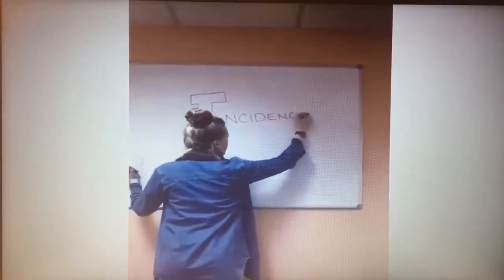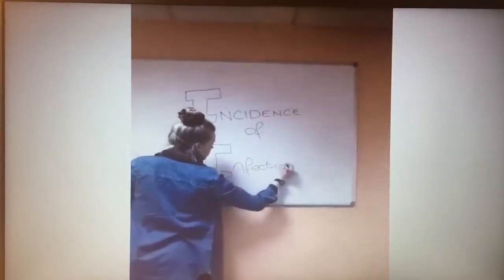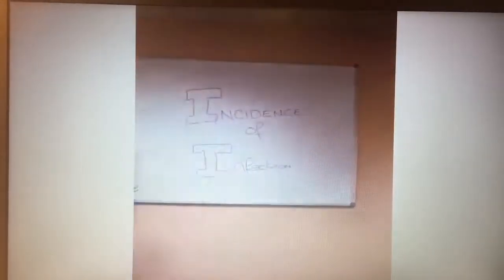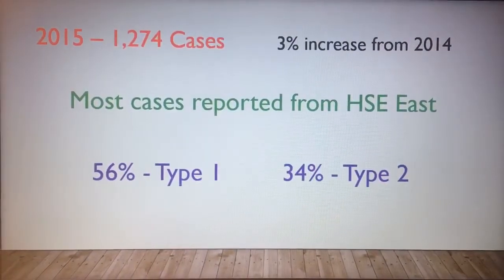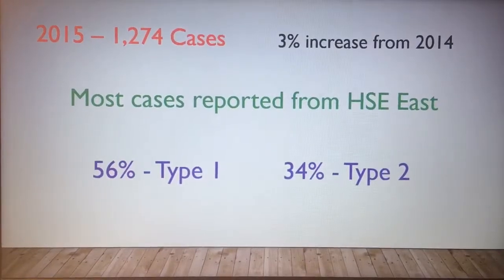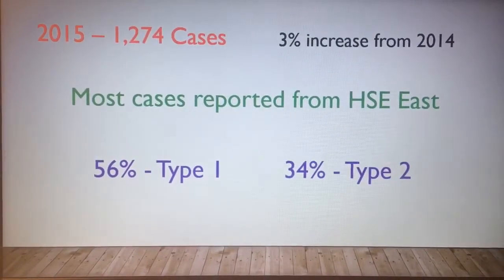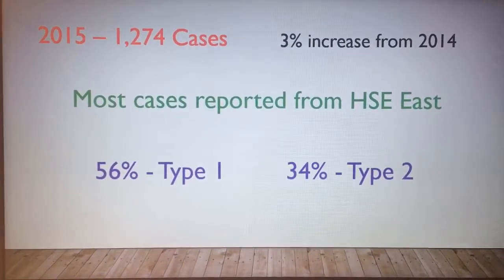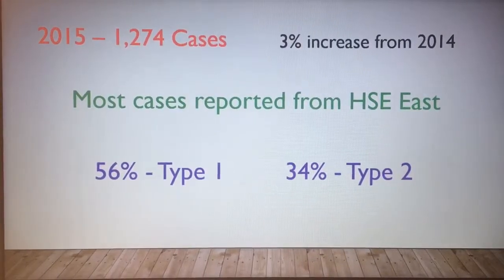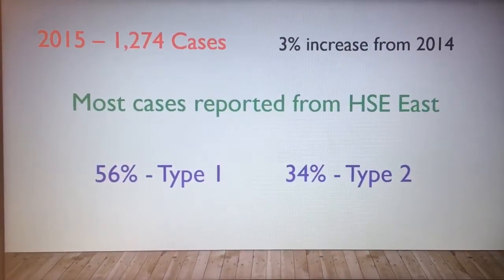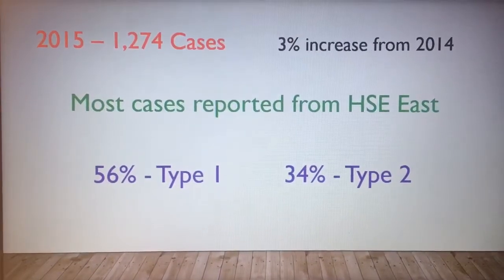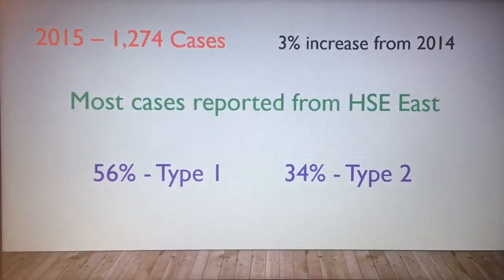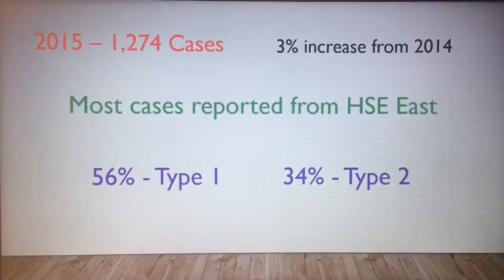Incidence of infection. In 2015, there were 1,274 cases reported of herpes simplex virus. 56% were type 1 and 34% were type 2. Most cases were reported from the HSE in the east and other parts of the country. This was a 3% increase compared to the figures in 2014.